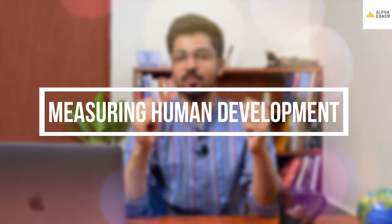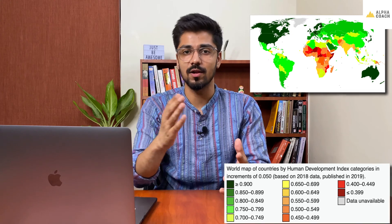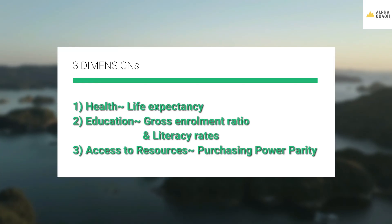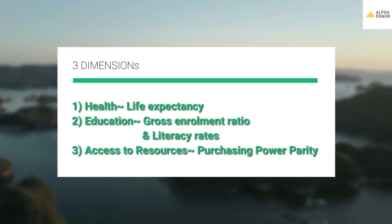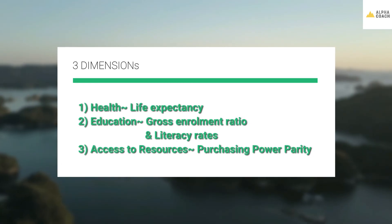Now that we have talked so much about human development, how exactly do we measure it? For that, the UNDP's Human Development Index ranks countries and gives them a score between 0 and 1 on the basis of three dimensions: health, education, and access to resources. Health is assessed by life expectancy, education by gross enrollment ratio and literacy rates, and access to resources in terms of purchasing power parity. So higher the score on HDI, higher is the level of human development.